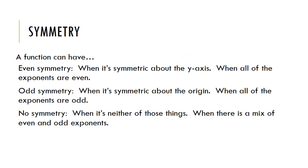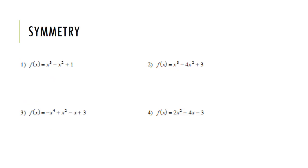Symmetry of functions is based on how you could fold the graph in half. Even symmetry means the function is symmetric around the y-axis. Odd symmetry means it's symmetric around the origin — you'd fold it across the y-axis and then across the x-axis. A shortcut: if all exponents are even, it has even symmetry; if all exponents are odd, it has odd symmetry; if there's a mix, it has no symmetry. For example 1, the exponents are 3, 2, and 0 — that's odd, even, and even — so there's a mix and no symmetry.